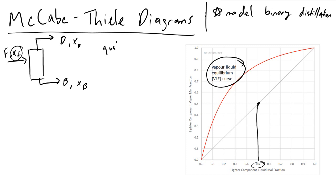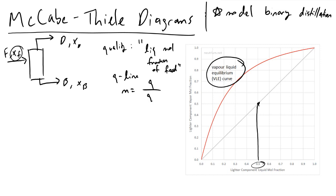Quality in binary distillation columns is equivalent to the liquid mole fraction of your feed. If quality Q equals one, all of your feed is liquid with no vapor phase. If quality Q equals zero, all of your feed is in the vapor phase. The Q line will have a slope M equal to Q over Q minus 1.